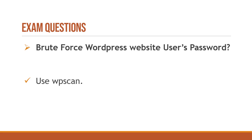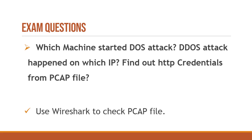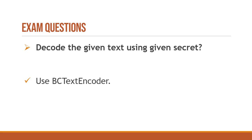For brute-forcing a WordPress website's user passwords, you use WPScan — a simple username and password list is already on your machine so no searching needed. Another question asks you to decode a hex file; use CryptTool for that. Three related questions — which machine started a DoS/DDoS attack, and find HTTP credentials from a PCAP file — all require Wireshark. You'll be given a PCAP file and analyze the packets to answer all three.